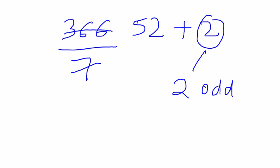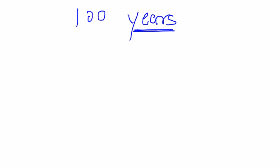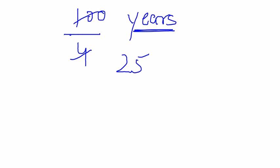Now, if I'm asked to find the number of odd days in the first 100 years, the first priority is to find the number of leap years and non-leap years within those 100 years. Dividing 100 by 4 gives 25 leap years, so the remaining 75 would be non-leap years.